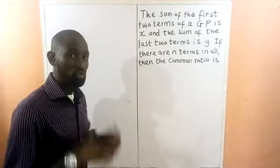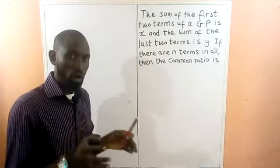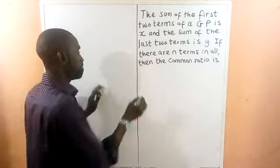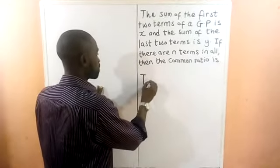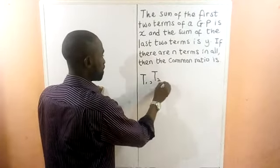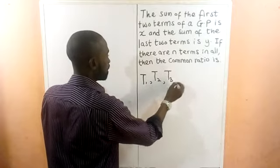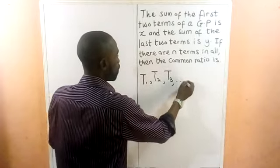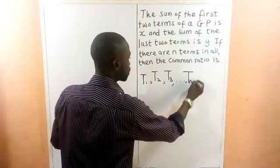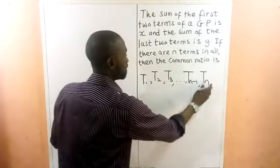Suppose we are given some terms that form a GP. We have the first term, the second term, the third term, then TN minus 1, and our TN.